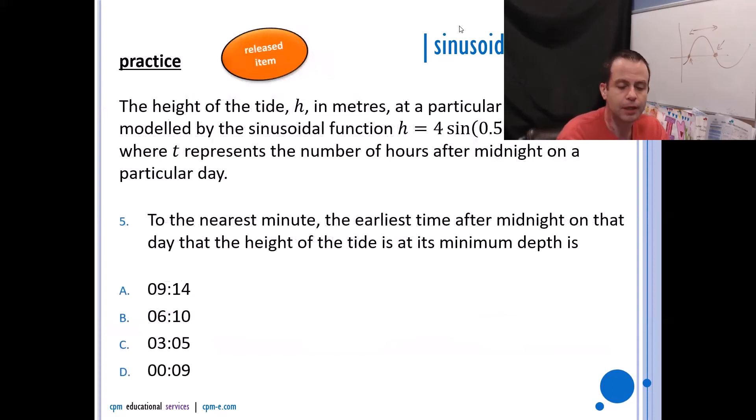Next up, the height of the tide. This is another released item. The height of the tide h in meters at a particular harbor can be modeled by the sinusoidal function, where t is the number of hours after midnight on a particular day. To the nearest minute, the earliest time after midnight on that day that the height of the tide is at its minimum.